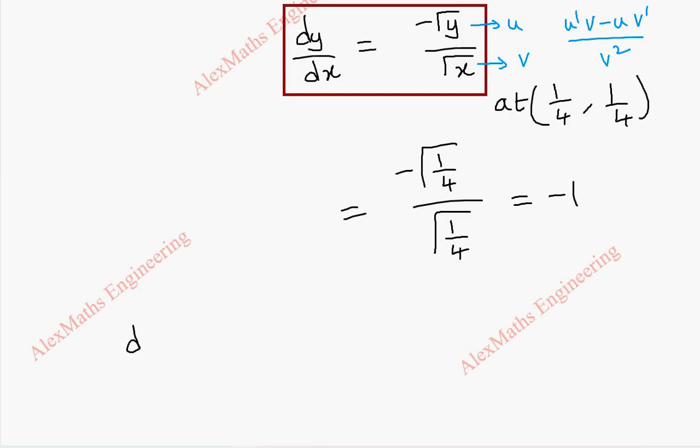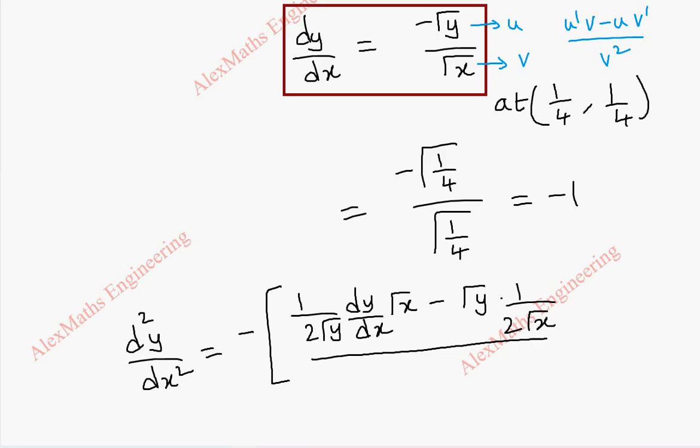So, d square y by dx square is equal to, we keep the minus separately, u dash will become 1 by 2 root y into dy by dx and v as it is minus u which is root y. So, v dash is 1 by 2 root x whole divided by v square which is x.